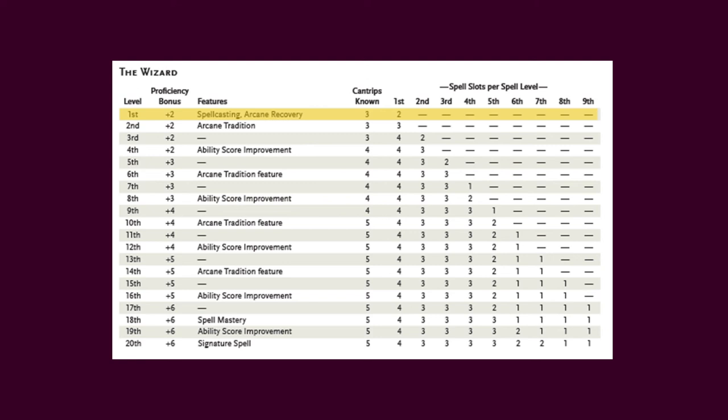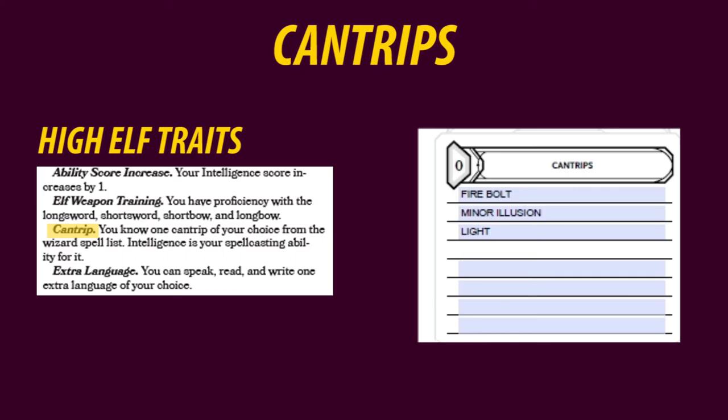But we can't forget about the cantrips. These are level 0 spells, meaning they're so easy and familiar to the character that they can be cast unlimitedly. They aren't as powerful as level 1 spells and cannot be changed once chosen, so pick carefully. My wizard gets 3 cantrips, but because I'm a high elf, I get to learn an additional cantrip — so don't forget to check your race and subrace features.